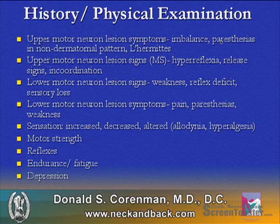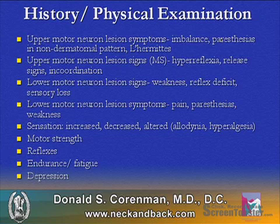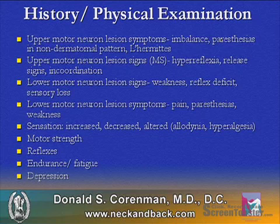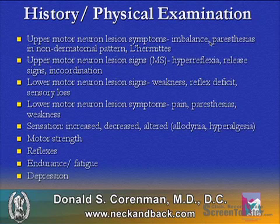A history and physical examination is one of the cores to determining the neurologic problem. Upper motor neuron lesion symptoms are imbalance, paresthesias in a non-dermatomal pattern, Lhermitte's sign, problems with fine motor skills, and possible bowel and bladder involvement. Upper motor neuron lesion signs are hyperreflexia, release signs such as Hoffman's and inverted radial reflex, and incoordination. Lower motor neuron lesion signs are weakness, reflex deficit, and sensory loss. Symptoms of lower motor neuron lesions are pain, paresthesias, and weakness.